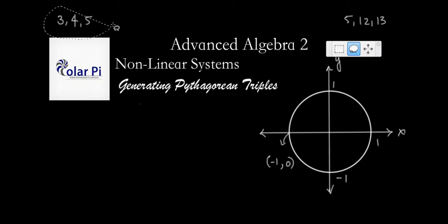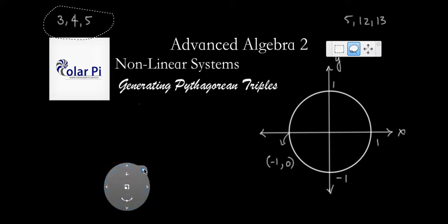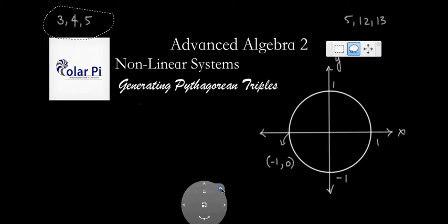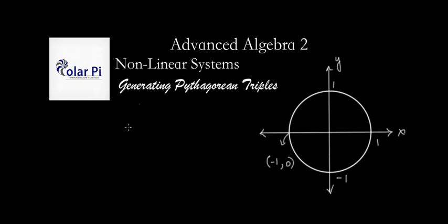But what we're going to do is cooler than that, which is that we're going to come up with the 3, 4, 5, the 5, 12, 13, and their multiples and infinitely many other Pythagorean triples by this formula we're going to derive. So how do we do this? Well, first, recall that the Pythagorean theorem says a squared plus b squared equals c squared.